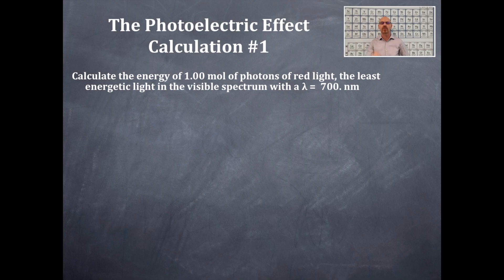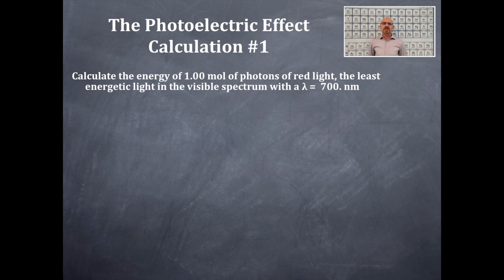We're going to calculate the energy of one mole of photons of red light — the least energetic light in the visible spectrum. This red light has a wavelength of 700 nanometers. Let's get this calculation moving.